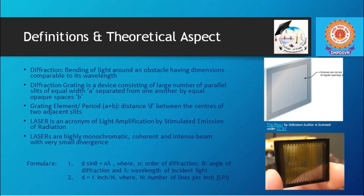Friends, diffraction phenomena is nothing but bending of light around an obstacle having dimensions comparable to its wavelength. Diffraction grating is a device consisting of large number of parallel slits of equal width, say A, separated from one another by equal opaque spaces, say B. Grating element or period, A plus B, stands for distance d between the centers of two adjacent slits.